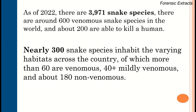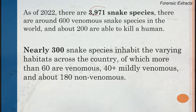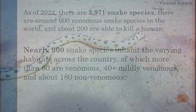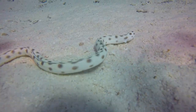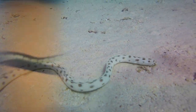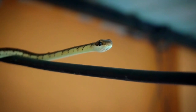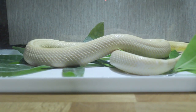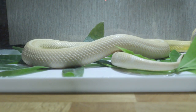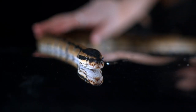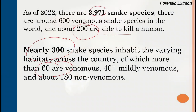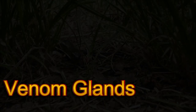For 2022, there are a total of 3,971 snake species. Among them, 600 are venomous and 200 are able to kill humans. In India, around 300 species are present, among them 60 are venomous, 40 plus are mildly venomous, and 180 are non-venomous snake species.